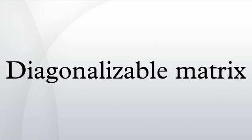In linear algebra, a square matrix A is called diagonalizable if it is similar to a diagonal matrix, that is, if there exists an invertible matrix P such that P inverse AP is a diagonal matrix.